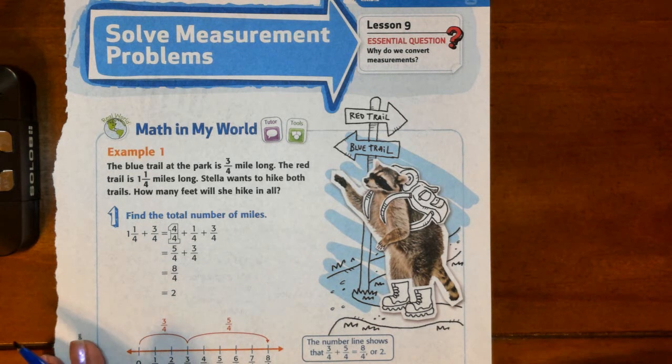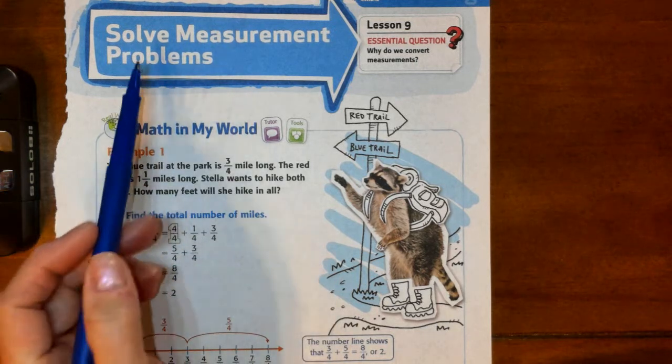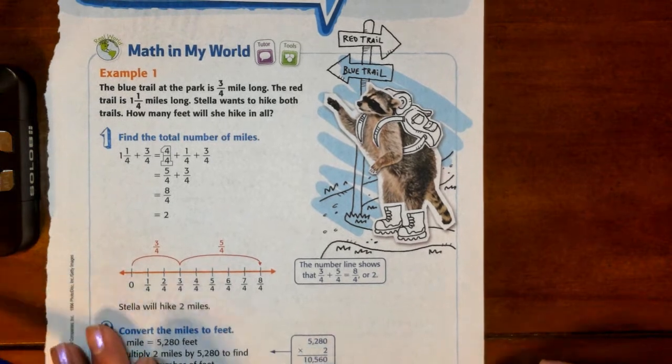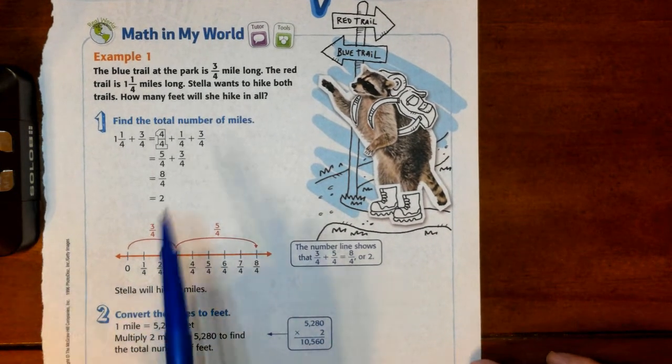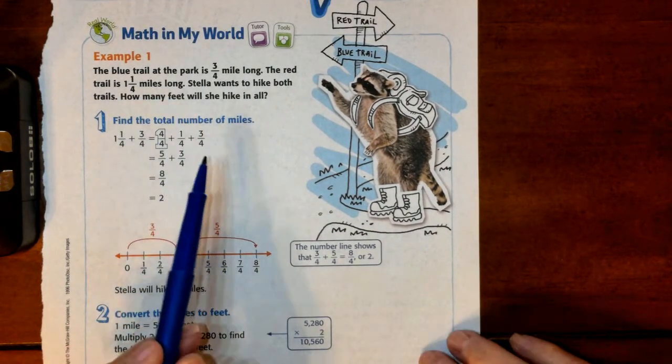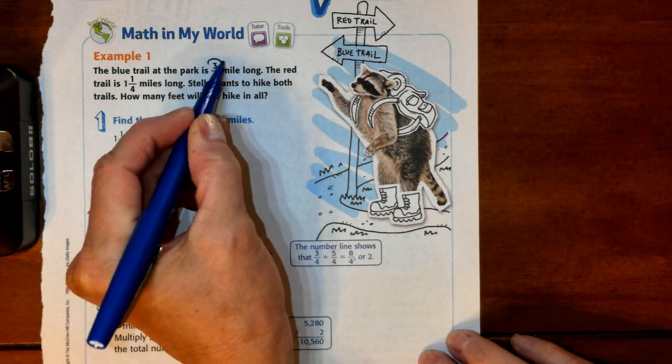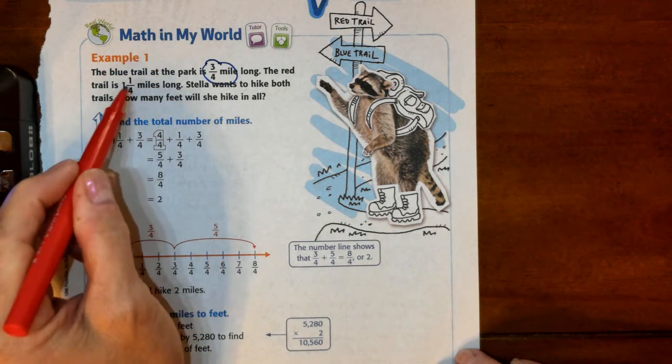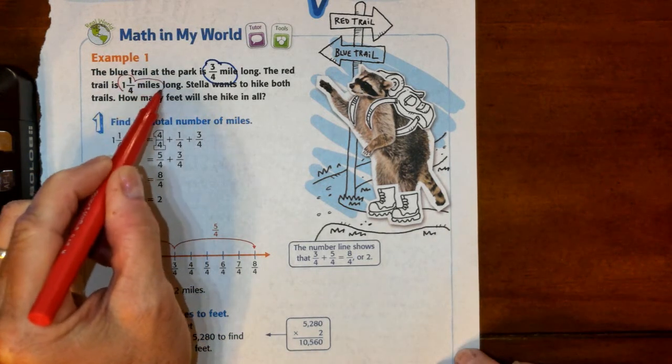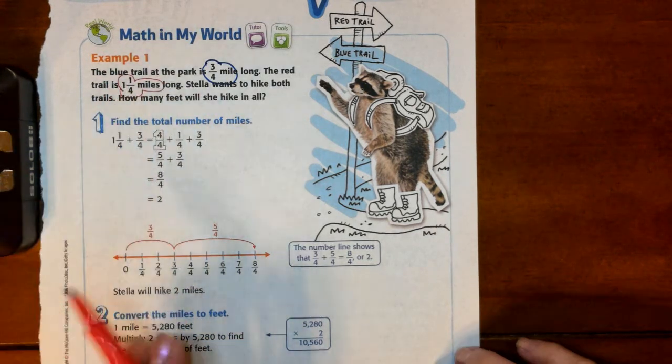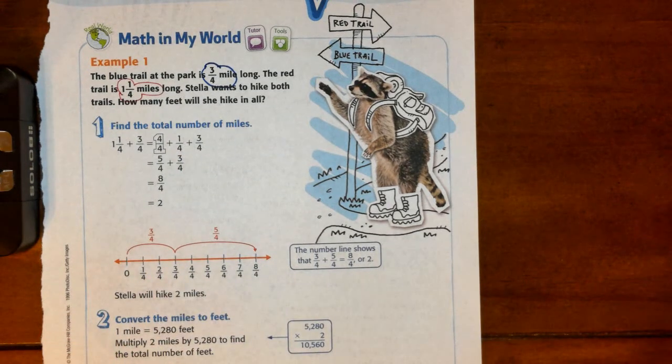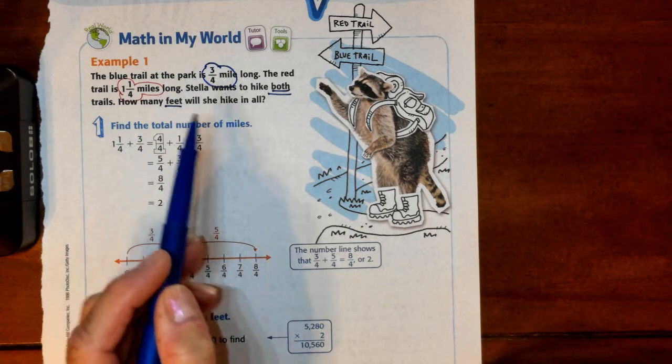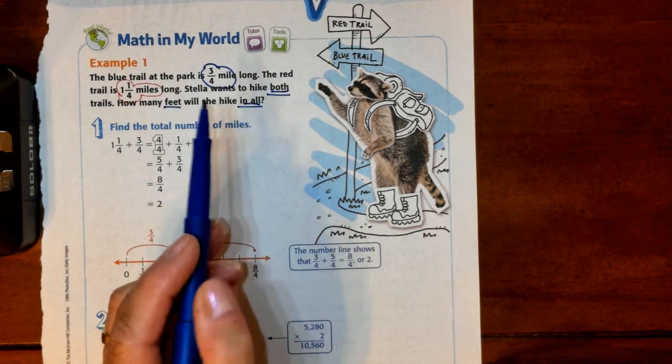In this chapter 11 lesson 9, we're going to solve measurement problems. So let's look at our first example. It says the blue trail at the park is three-quarters of a mile long, the red trail is one and a quarter miles long, and Stella wants to hike both trails.